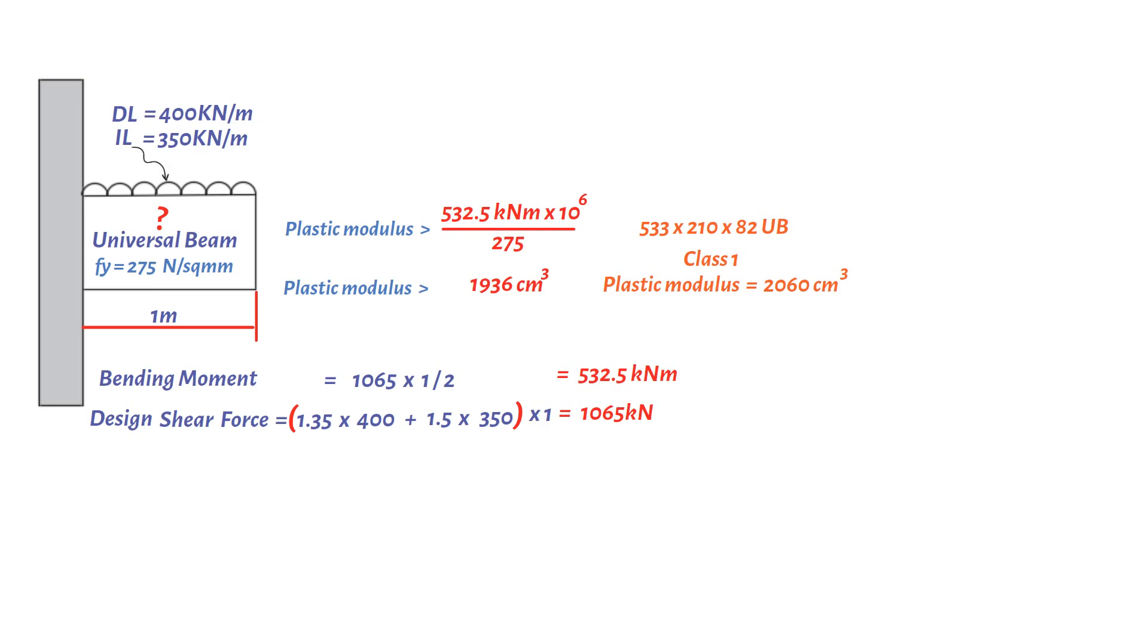Next, we need to check the shear strength capacity of the selected section, which equals shear area multiplied by design strength of steel divided by square root of 3. Bear in mind, shear area of steel section equals the cross-sectional area minus 2 the overall breadth times flange thickness plus web thickness plus 2 of the root radius multiplied by the flange thickness, which should be greater than the depth of the web times flange thickness.